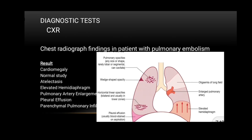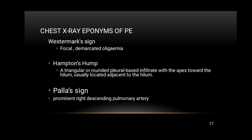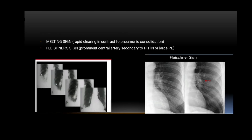Chest X-ray can show cardiomegaly, atelectasis, elevated hemidiaphragm, pulmonary artery enlargement, pleural effusion, and parenchymal pulmonary infiltrates, though a fair number of patients will present with a normal chest X-ray. Eponyms include Westermark sign (focal demarcated oligemia), Hampton's hump (a triangular or rounded pleural-based infiltrate with apex toward the hilum), and Palla sign (prominent right descending pulmonary artery). Additional signs include the melting sign (rapid clearing in contrast to pneumonia consolidation) and Fleischner sign (prominent central artery secondary to pulmonary arterial hypertension or large pulmonary embolism).